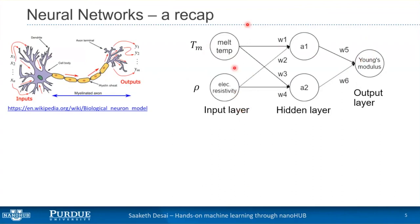The first layer you'll come across is the input layer. Inputs to our model are melting temperature and resistivity — you can call them Tm and rho for shorthand. That is the input layer. We want to predict, in this case, Young's modulus, though today we'll look at a different example. In between, you can have as many hidden layers as you want, with each layer having as many neurons as you want. Here we have one layer with two neurons, A1 and A2.